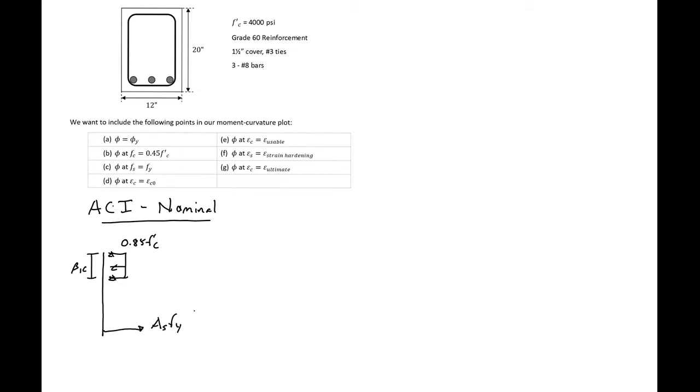Our step one will be to find our height c, and we can do that using equilibrium: tension equal to compression. Our tension is ASfy. Our compression is 0.85f'c times b times beta1c. So we can solve for c to be ASfy divided by 0.85f'c times b times beta1.